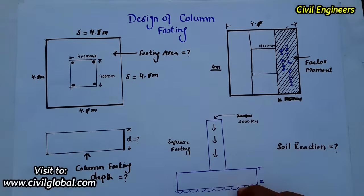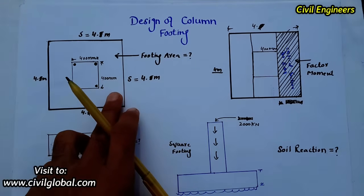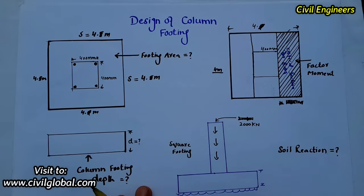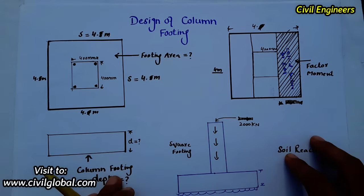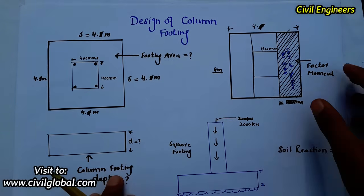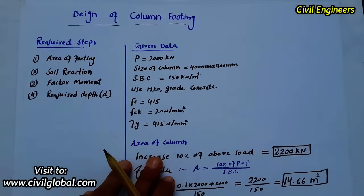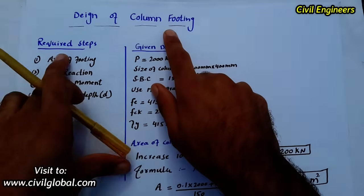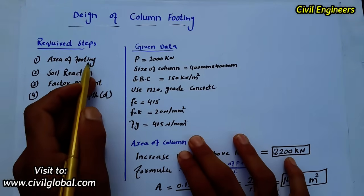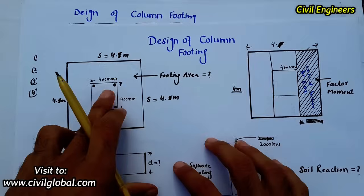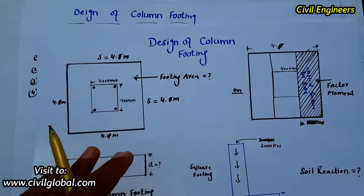So, design of column footing — let's go over the required steps. This is a square column, and when you want to design the column footing, there are several steps required. The first step is to find out the area of the footing.